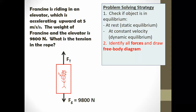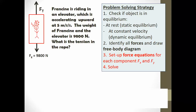In this free body diagram, the vectors for the force of gravity and the force of tension are not equal in length. That's because she has a net acceleration upward, which means she needs a greater force in the positive direction — so the force of tension vector has to be larger than the force of gravity. For this problem, there are no forces in the x-direction, so we'll just look in the y-direction.